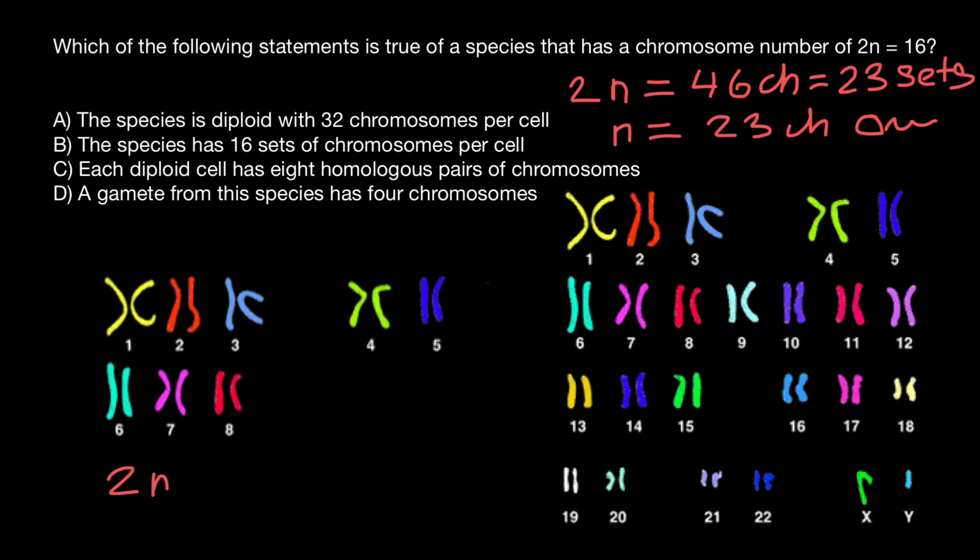Eight pairs means 16 chromosomes. So 2N would equal 16 chromosomes or eight pairs of chromosomes or sets of chromosomes. And N, which is egg cell or sperm, we can find eight chromosomes.